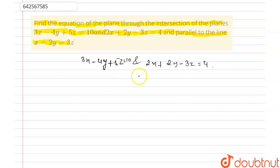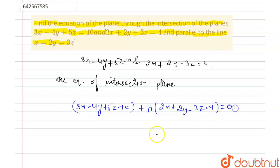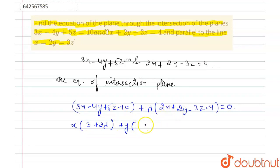So we have to find the equation of the plane through the intersection of the planes. The equation of the intersection plane can be written as: 3x minus 4y plus 5z minus 10 plus lambda times of 2x plus 2y minus 3z minus 4 equals to 0. Simplifying, taking x, y, and z as common, we get: x(3 plus 2 lambda) plus y(2 lambda minus 4) plus z(5 minus 3 lambda) minus 4 lambda minus 10 equals to 0.